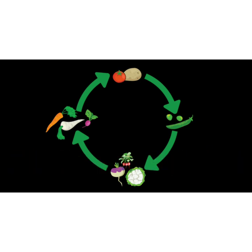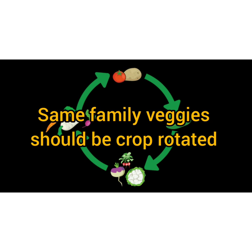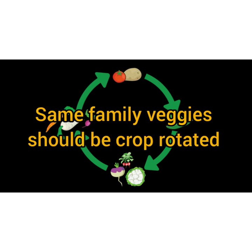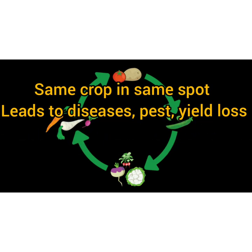We need to rotate our crop every season. We should not grow the same family of vegetables in the same bed. For example, if you grew tomato this season, you cannot grow brinjal or eggplant next season because both belong to the same family, which leads to disease, pest, and yield loss.